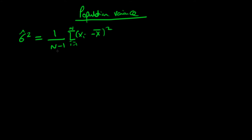We said that this is quite a counterintuitive result because we might have expected at first glance this to be divided by 1 over n rather than 1 over n minus 1. So in this video I want to provide another way of thinking about why we need to divide by 1 over n minus 1 rather than 1 over n, and that's to do with thinking about the sample mean as a least squares estimator.